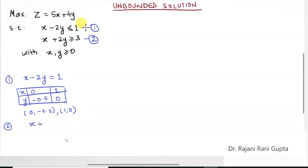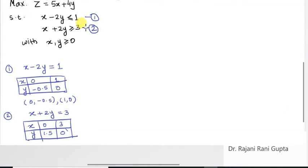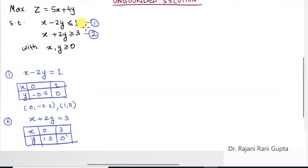For constraint 2, written as the line x + 2y = 3, we find two points similarly. When x = 0, y = 3/2 = 1.5. When y = 0, x = 3. So the points are (0, 1.5) and (3, 0). Remember we always represent a point as (x, y) — first the value of x, then the value of y.